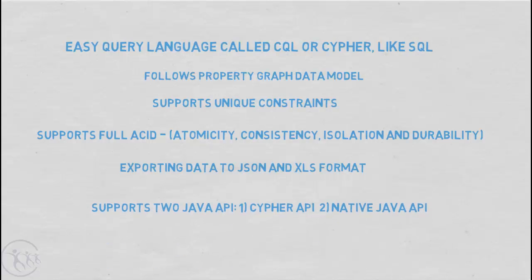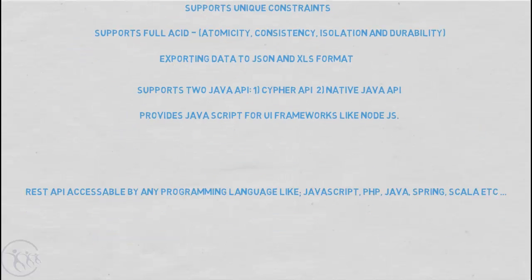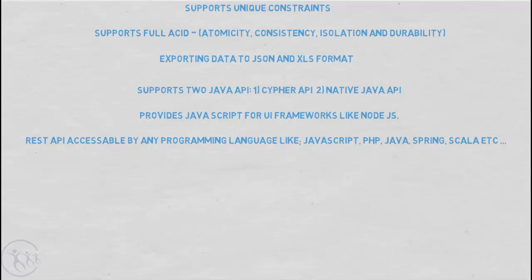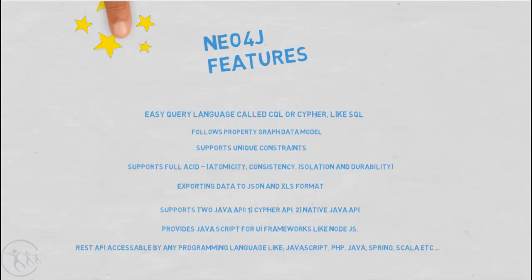Neo4j provides some excellent support for various programming languages. In fact, for Java, it supports two APIs. The first being for CQL, or Cypher, and the other being a native Java API. Neo4j provides support for JavaScript and various JavaScript frameworks such as jQuery and Node.js. And best of all, it provides a REST API. And that provides access for a variety of programming languages from JavaScript, PHP, Java, Java with Spring, and the list goes on.